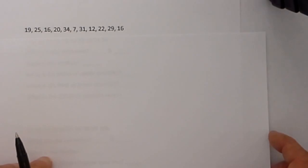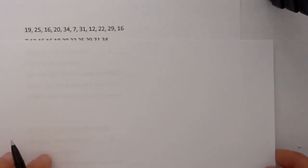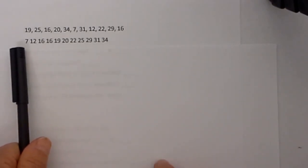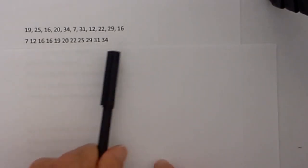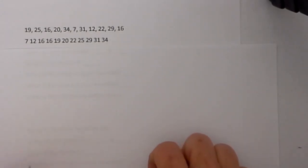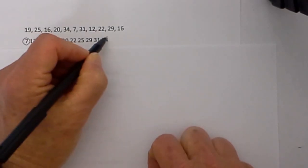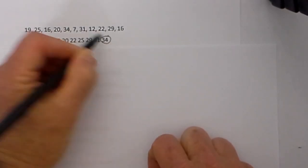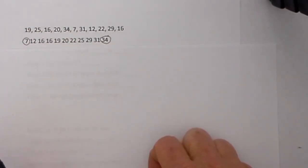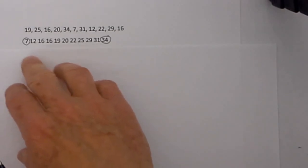Step 1 is to put them in least to greatest order. To save time I have gone ahead and done that — you can see we start at 7 and end at 34. Now we are going to identify the extremes. The extremes would be 7 and 34, and you can see why you need to order them from least to greatest because it takes the guesswork out of finding the extremes.